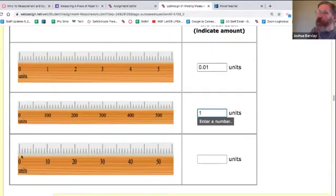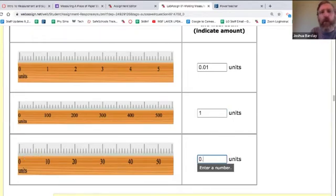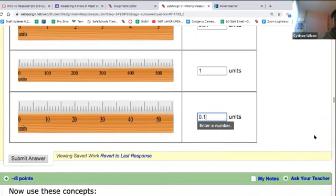And on this final one, these marks are every one. So that means I can estimate between them to the zero point. What place could I estimate to? These marks are every one. So I can estimate to the one tenth of that is 0.1. That's where we got that.